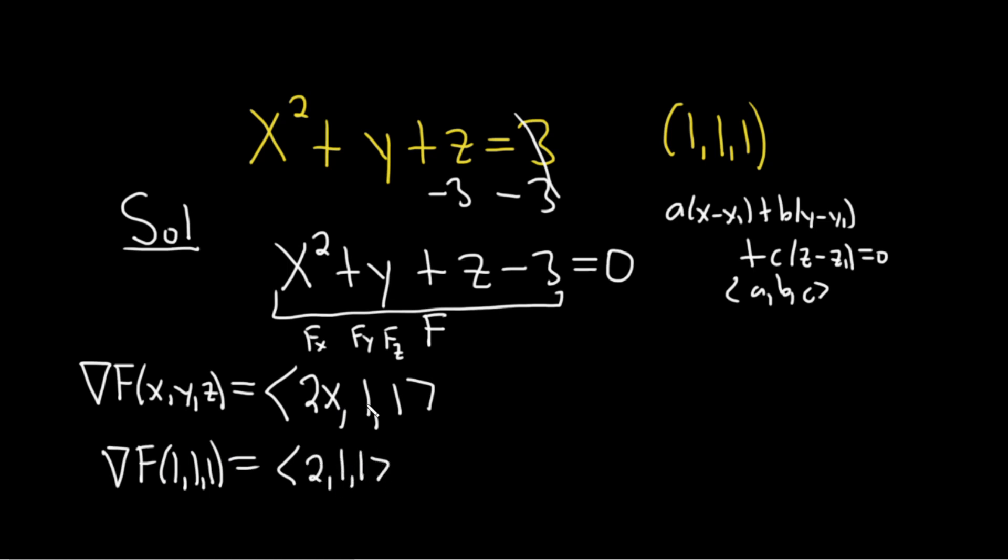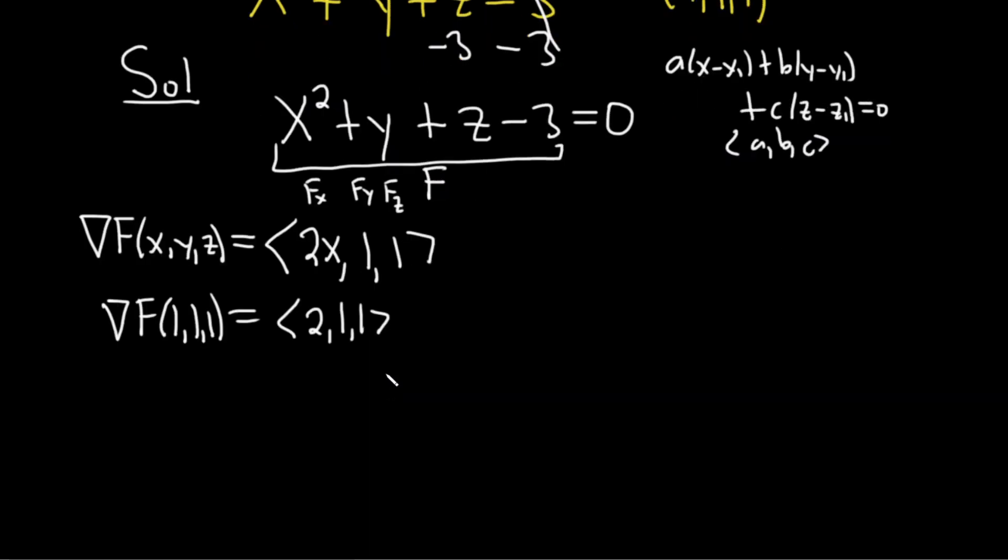All right, good stuff. So now we just plug everything into our formula. I'll write the formula again down here. It's a times x minus x1, then b times y minus y1, and then c times z minus z1. And that's all equal to 0.